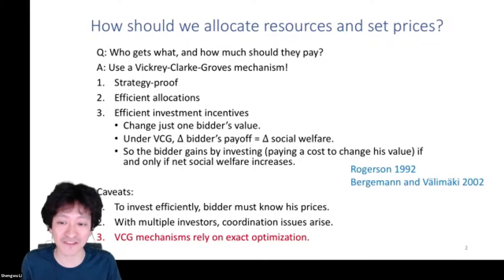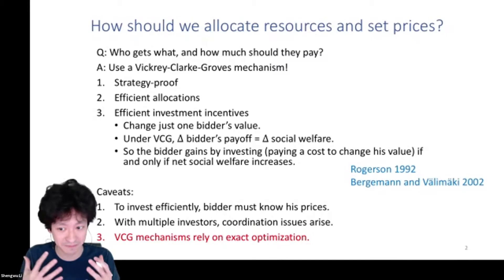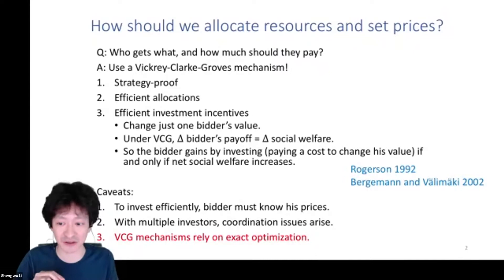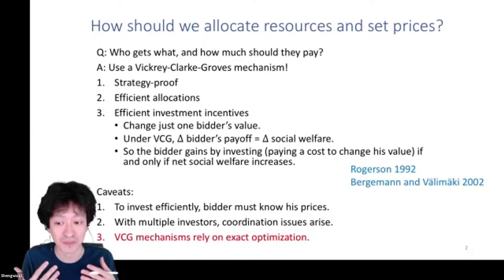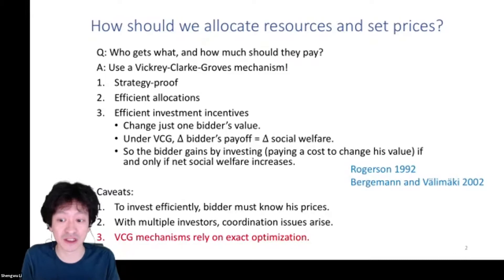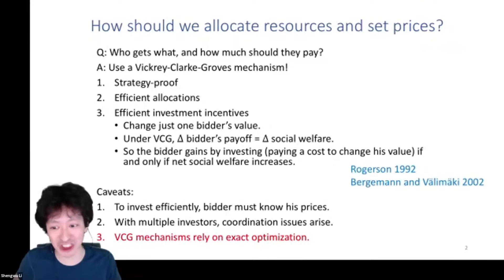An equally fundamental but less well-appreciated feature is that VCG yields efficient investment incentives in a precise sense. Imagine there are multiple bidders with different values for a good. Suppose a bidder can increase his value by making some costly complementary investment. Under the VCG mechanism, the change in that bidder's payoff is exactly equal to the change in social welfare.